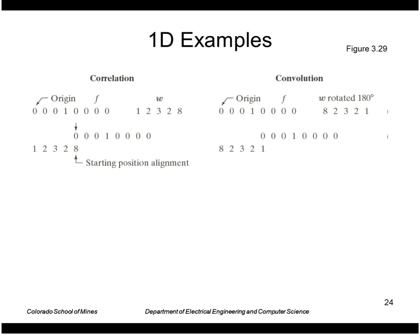Let's look at how correlation and convolution work on one-dimensional examples. Here we'll use a very simple image which is just an impulse. It's all zeros except for a one. We'll first take a mask W and correlate it with this, then try a convolution with the same mask.